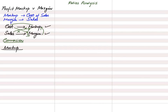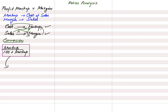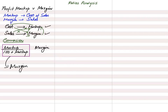There are simple formulas for these conversions. To convert a markup percentage into margin percentage, use: markup ÷ (100 + markup) = margin. To convert a margin percentage into markup percentage, use: margin ÷ (100 − margin) = markup. Inputting markup into the first formula gives you margin, and inputting margin into the second formula gives you markup.